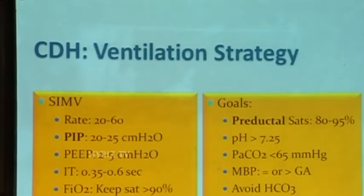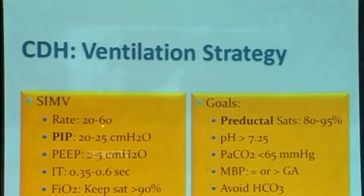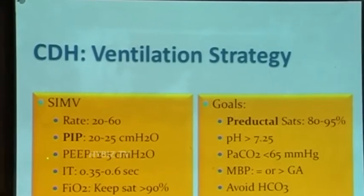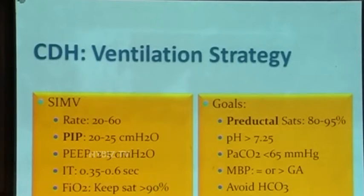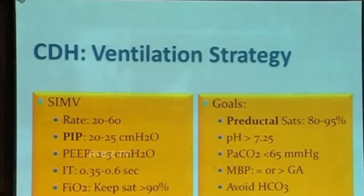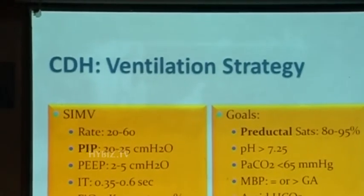For ventilator strategy: keep rate around 20 to 60, PIP not more than 25, PEEP adequate up to 5 — high PIPs are not needed because the lungs are hypoplastic. IT time maximum 0.6 seconds. Titrate FiO2 to target about 90% pre-ductal saturation. Don't even look at post-ductal saturation — with pulmonary hypertension and shunting it could be very low. You may have to accept pre-ductal saturation as low as 80, as long as there is adequate perfusion. It is not low saturation that kills the patient — it is low perfusion.